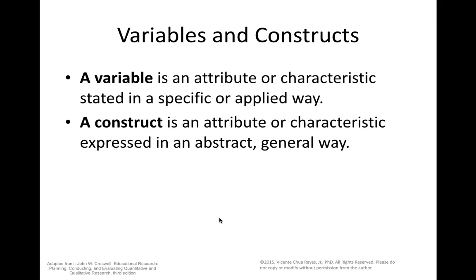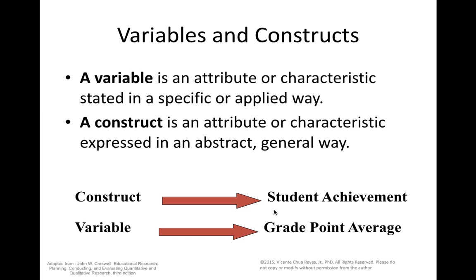A variable is an attribute or characteristic stated in a specific or applied way. A construct is an attribute or characteristic expressed in a more abstract and general way. For example, student achievement is essentially a construct — it's a very abstract concept. Grade point average is an example of a variable; it's very specific. From a quantitative perspective, student achievement can be measured by grade point averages; from a qualitative viewpoint, it could be student satisfaction or student voice.